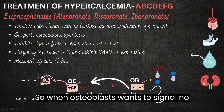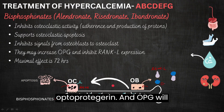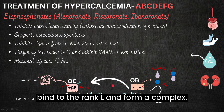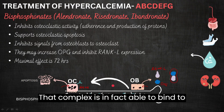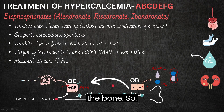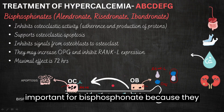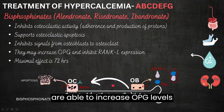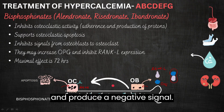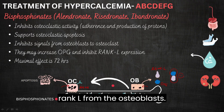When osteoblasts want to signal to stop removing the bone, they produce something called OPG, which is osteoprotegerin. OPG will bind to RANK-L and form a complex, which is able to bind to RANK and signal to osteoclasts to stop removing the bone. Bisphosphonates are important because they are able to increase OPG levels and produce a negative signal, or they can inhibit the expression of RANK-L from the osteoblasts.